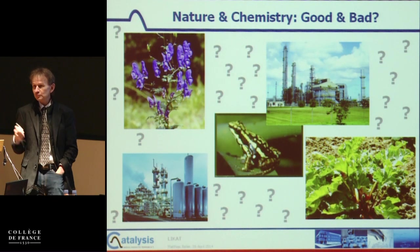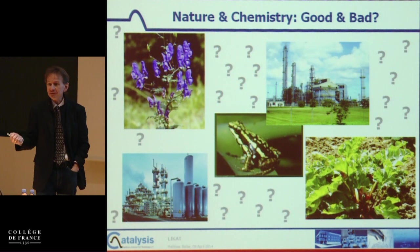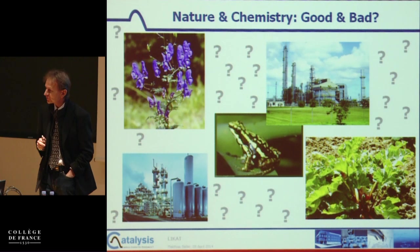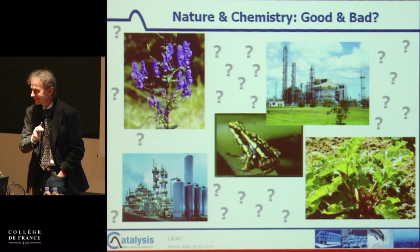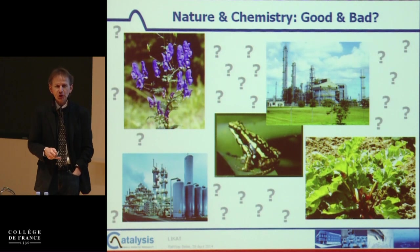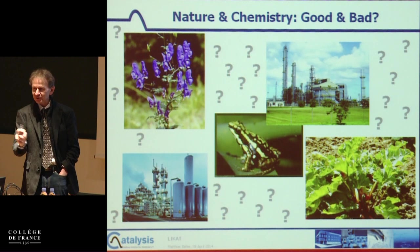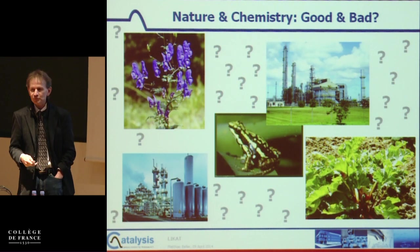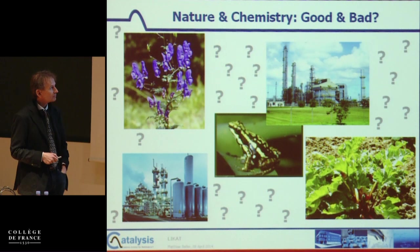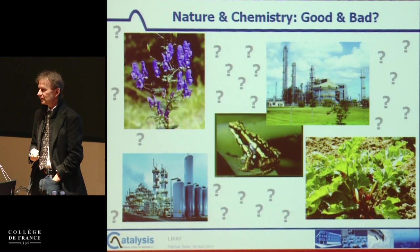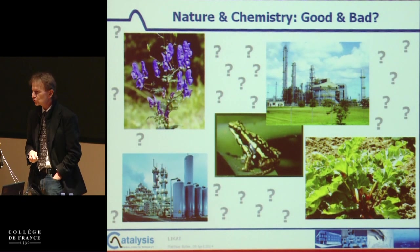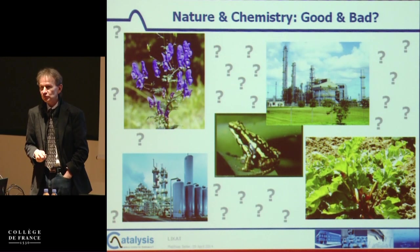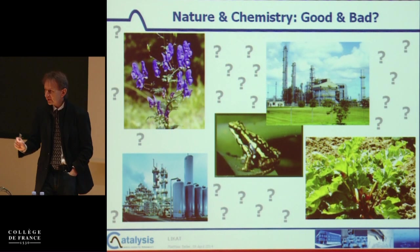This is rhubarb. Rhubarb can be eaten without problems, but if you harvest it too late it contains a lot of oxalic acid — which we might actually produce from carbon dioxide. In Germany, you should not harvest it after July because the concentration of oxalic acid is too high and will cause kidney problems. And this is the famous South American frog, which produces one of the most toxic compounds on earth — used by the Indians for their arrows.